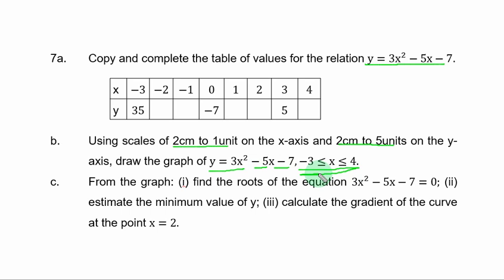Roman figure 1. Find the roots of the equation 3s squared minus 5s minus 7 equal to 0. Roman figure 2. Estimate the minimum value of y. Roman figure 3. You are asked to calculate the gradient of the curve at the point s equal to 2.